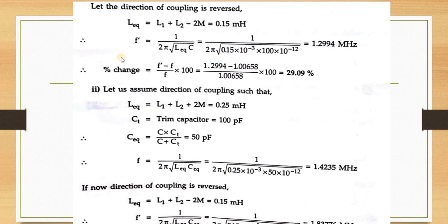The percentage change in frequency = (F'−F)/F × 100 = 29.09%.